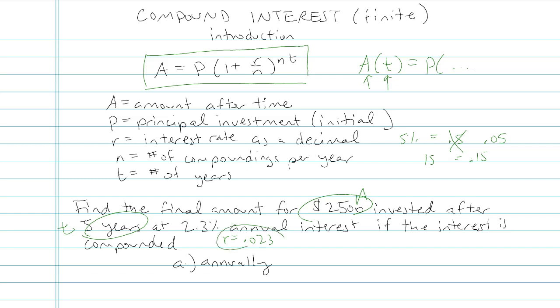And then the other thing, these other parts A, B, and C are going to represent how often it's compounded. So parts A, B, and C are different changes in N. Let's go ahead and try it.